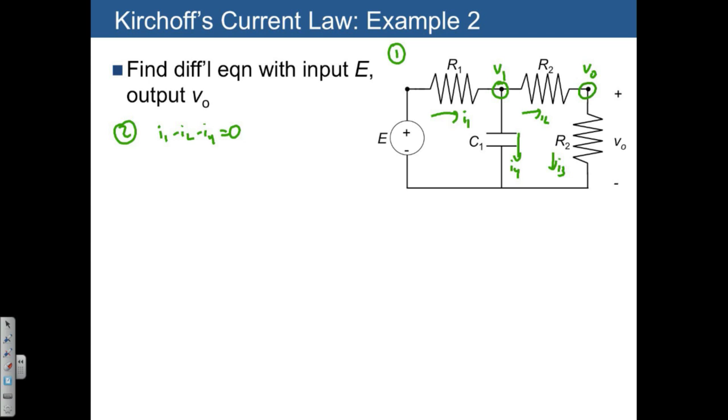For the second junction, I2 minus I3 equals 0. Step three is to apply the element laws.